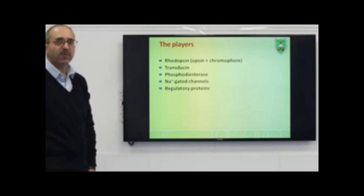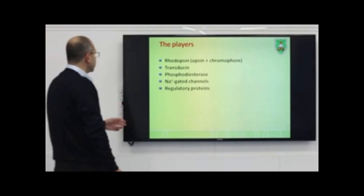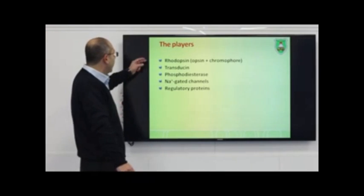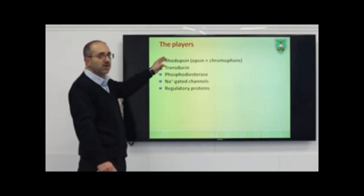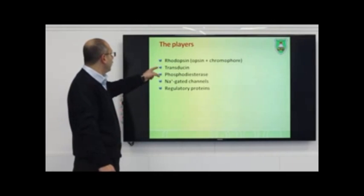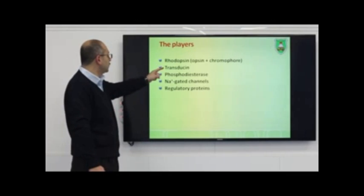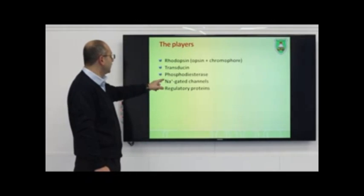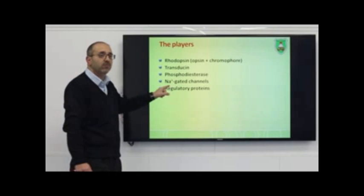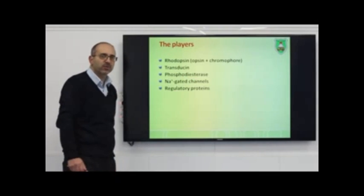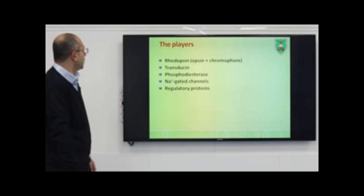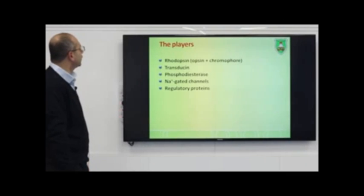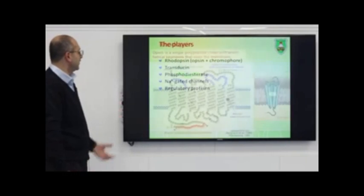The molecular components of visual transduction include the membrane receptor rhodopsin, the G-protein transducin, phosphodiesterase, the gated channels, and a large number of regulatory proteins — each with an important role. Let's talk about rhodopsin first.